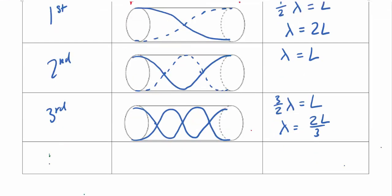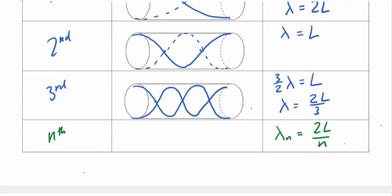Generalizing for the free-free tube, the nth wavelength is λ_n = 2L/n. Unlike the fixed-free case, all harmonics — first, second, third, fourth, fifth, and so on — exist in the free-free system. That's it for part two.